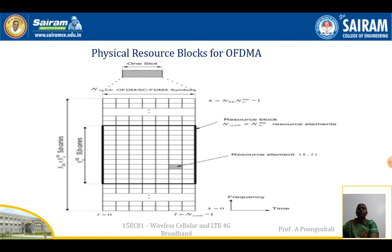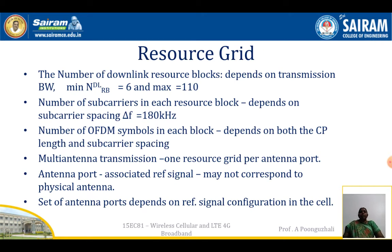The number of downlink resource blocks depends on the transmission bandwidth. The minimum number of resource blocks is 6 and the maximum is 110. The number of subcarriers per resource block depends on subcarrier spacing — delta f equals 180 kHz. The number of OFDM symbols per block depends on both cyclic prefix length and subcarrier spacing. Multi-antenna transmission provides one resource grid per antenna port.